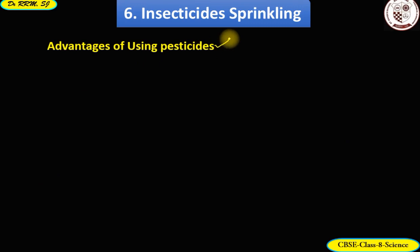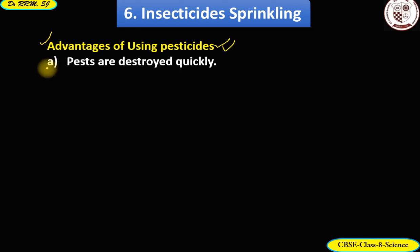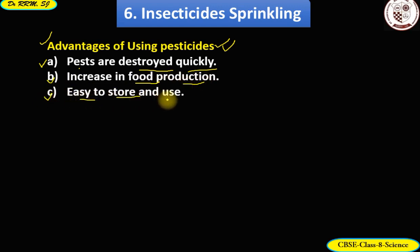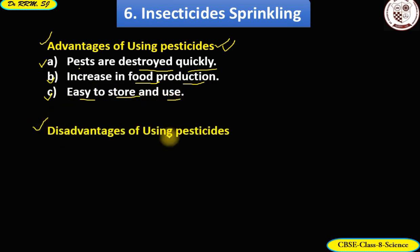The advantages of using pesticides — often asked in exams — are three: first, pesticides destroy pests quickly; second, healthy crops increase food production; third, pesticides are easy to store and use.